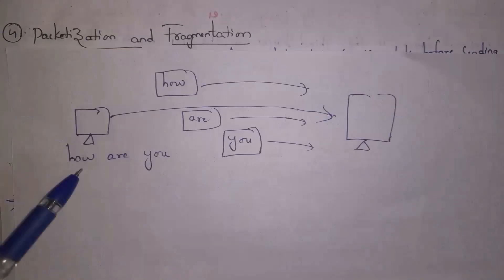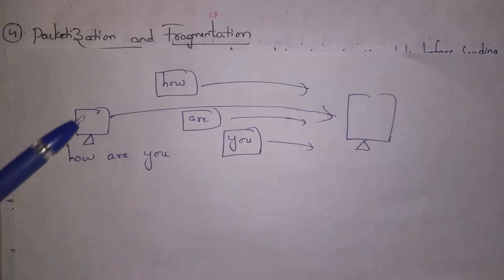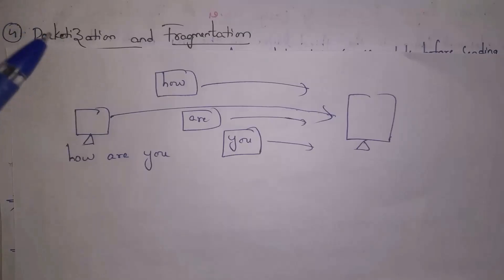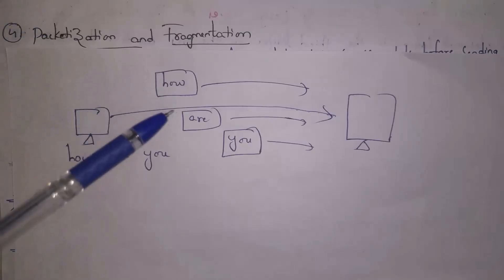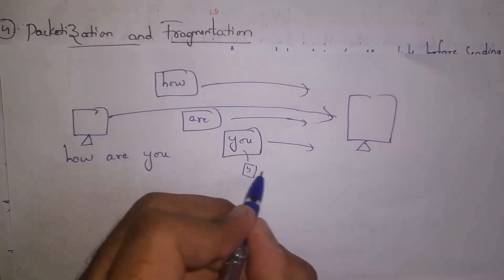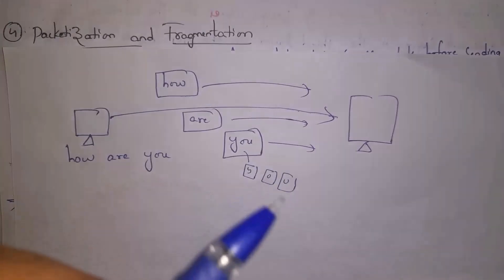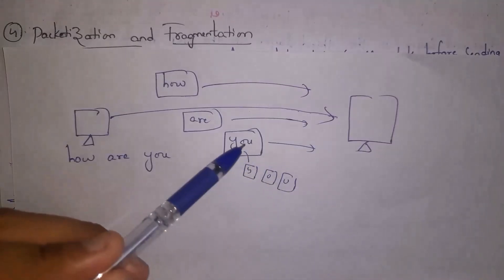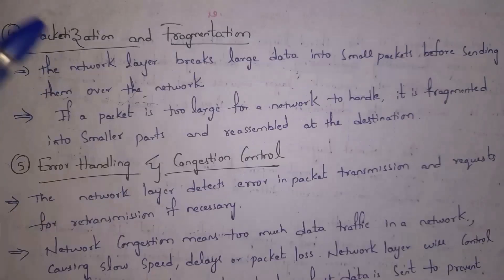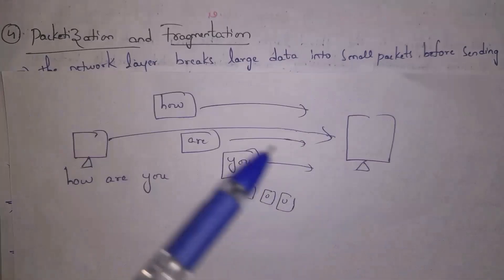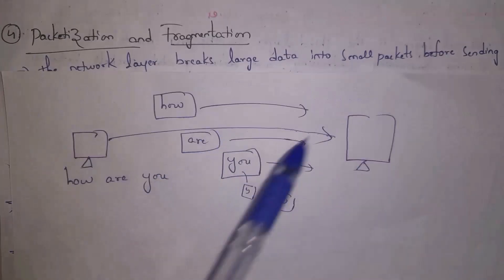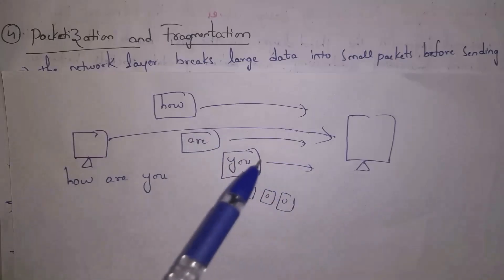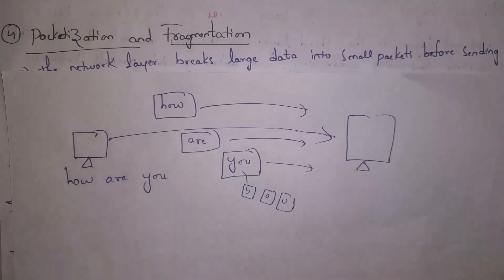The fourth function is packetizing and fragmentation. The network layer performs packetizing — that is dividing complete data into pieces, which we call packets. If a packet is too large, then it is further divided into smaller pieces. Dividing a larger packet into smaller parts is known as fragmentation. Each packet is transferred to the receiver, and when the receiver receives the data, the data is rearranged in order and then the receiver reads the data.